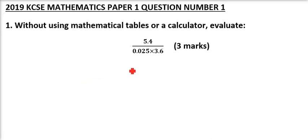Question number one. We are told without using mathematical tables or calculator, evaluate. So we are given 5.4 divided by 0.025 multiplied by 3.6.